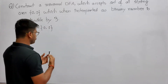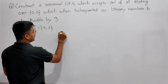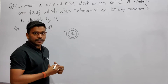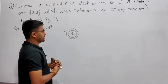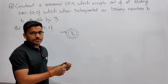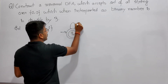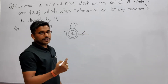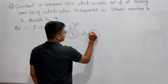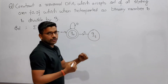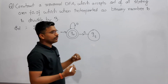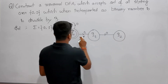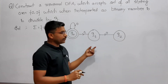So I will create one initial state. We also have to assume that epsilon belongs to this language, so the initial state represents remainder 0. Any number of 0s is divisible by 3, so you create a loop on Q0 for input 0. If you get 1, then in decimal it is 1; divide by 3 you get remainder 1, so go to Q1. If at Q1 you get 0, then binary 10 is 2; divide by 3 gives remainder 2, so go to Q2.